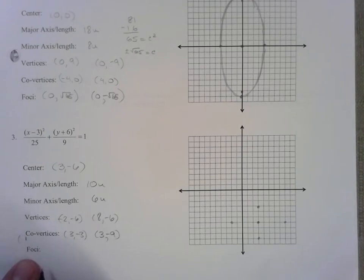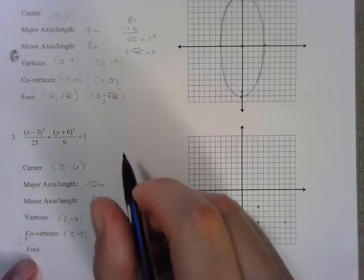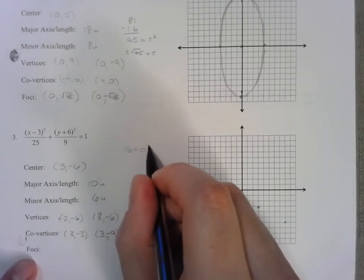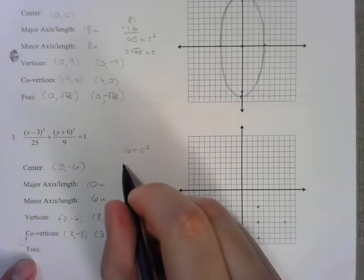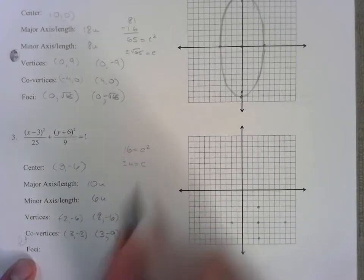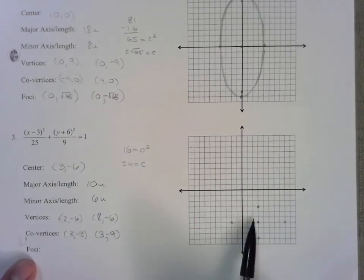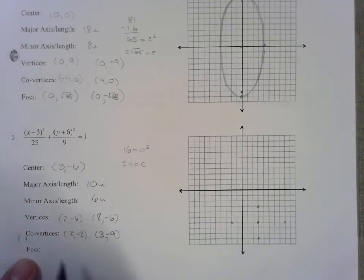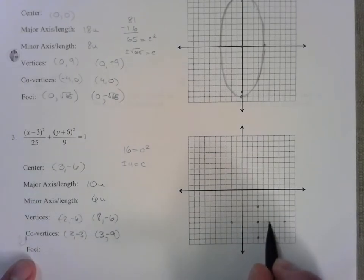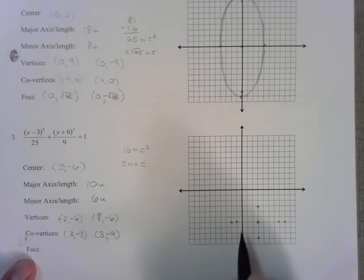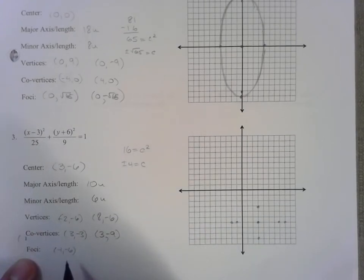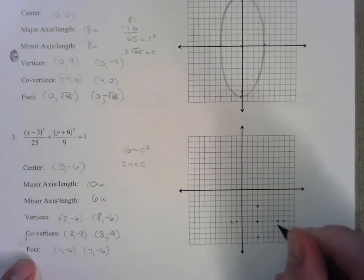I can sketch a picture, but first let's put in our foci. Our foci will take 25, we'll subtract 9, that gives us 16 = c². So c = ±4. We're going to add that to the x coordinate, because foci are always located on the major axis. So let's add and subtract 4, so if I go 4: 1, 2, 3, 4, and 1, 2, 3, 4. So (-1,-6) and then (7,-6). These would be our foci 1 and foci 2.